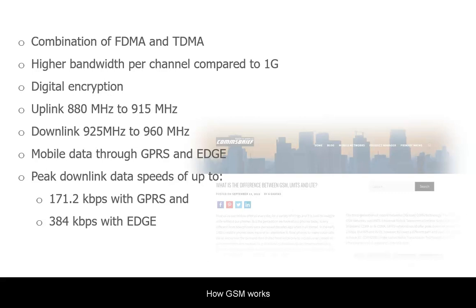Mobile data or internet capability existed in the original GSM networks but it wasn't efficient enough, which is why GPRS, General Packet Radio Service, and EDGE, Enhanced Data for Global Evolution, were introduced. Both GPRS and EDGE were packet-based or packet-switched. GPRS could offer peak downlink speeds of up to 171.2 kbit per second and EDGE could offer 384 kbit per second.